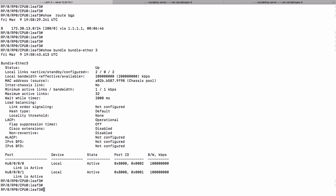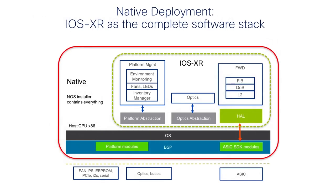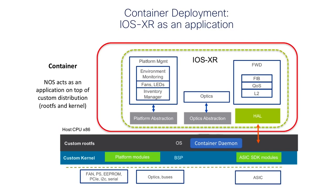In addition, I'd like to touch on deployment paradigms for IOS XR on white box hardware. There are two types. Native deployment: IOS XR acts as a complete software stack, with all abstraction layers — ONLP libraries, platform modules, etc. — supplied as a single installer package, i.e., the ONIE-compatible installer image contains everything. Container-based deployment: IOS XR acts as an application; the integrator brings their own root FS or kernel, and IOS XR is delivered as a container on top of the system, with abstraction layers integrated into the container image while the rest of the system is managed by the integrator.